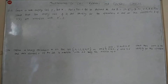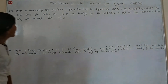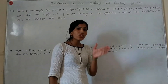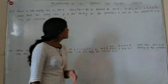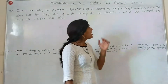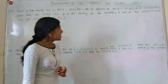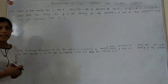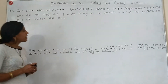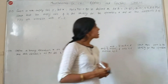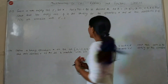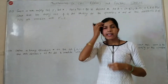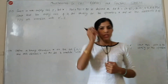Question 13: Given a non-empty set X, operation star on P(X) to P(X) is defined as A star B equals (A minus B) union (B minus A) for all A, B belonging to P(X). Show that the empty set is the identity for the operation star, and all elements A of P(X) are invertible with A inverse equal to A.